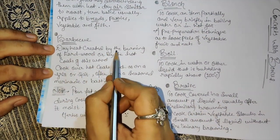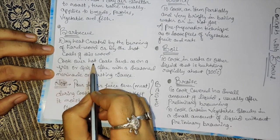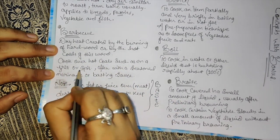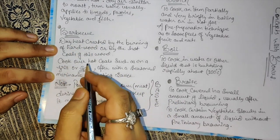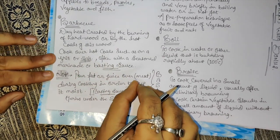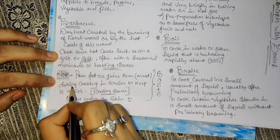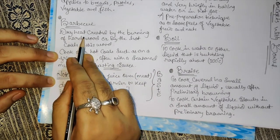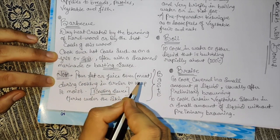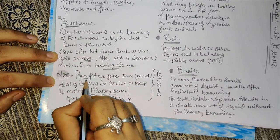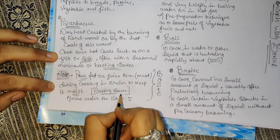Barbecue - dry heat created by the burning of hot wood or hot coal. Cook over hot coal such as on a grill or spit, often with a seasoned marinade or basting sauce. The note about basting sauce: pour fat or juice over meat during cooking in order to keep it moist. That is called basting sauce.